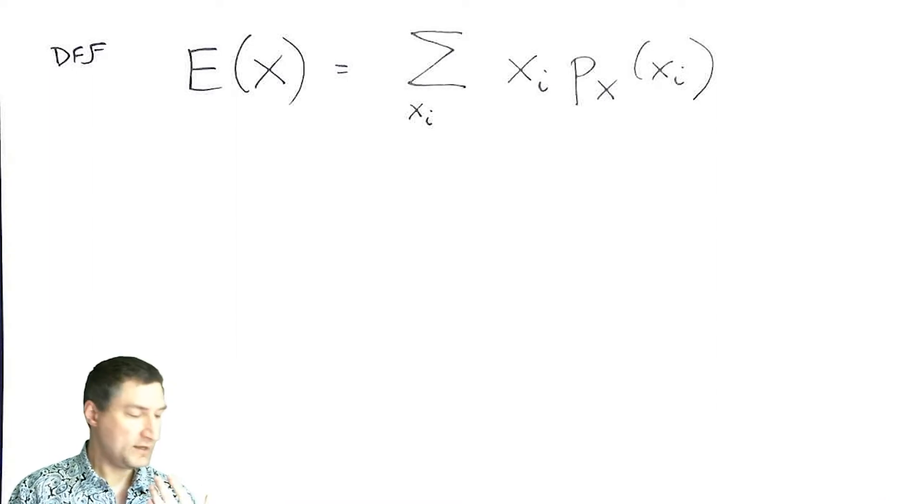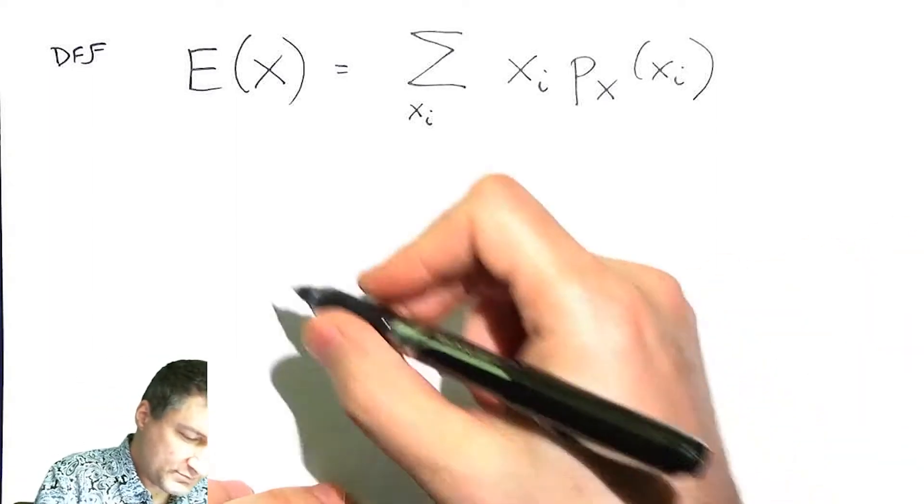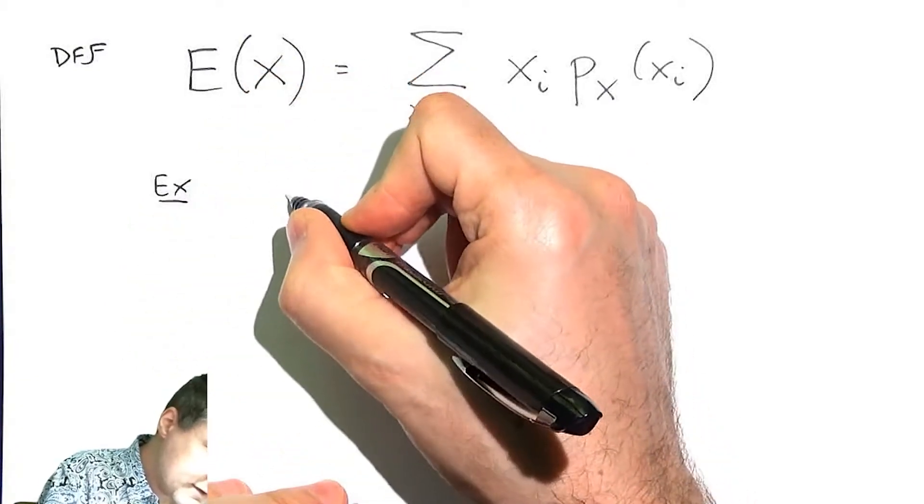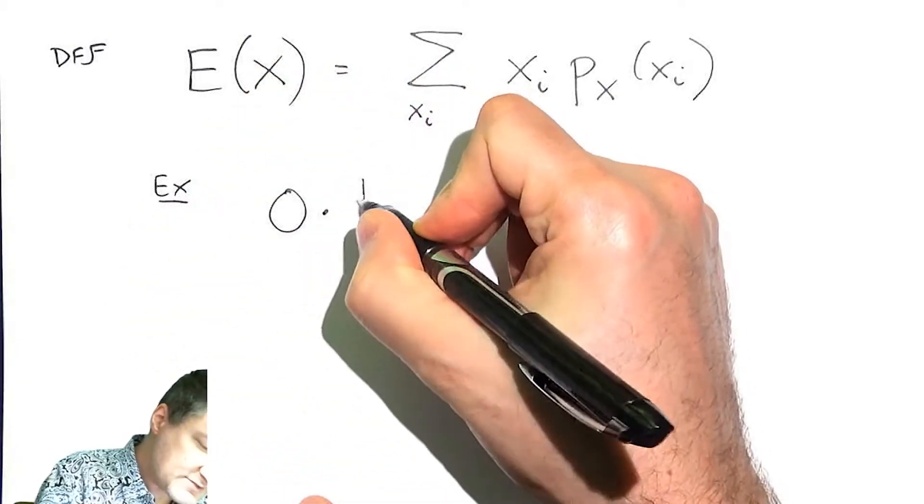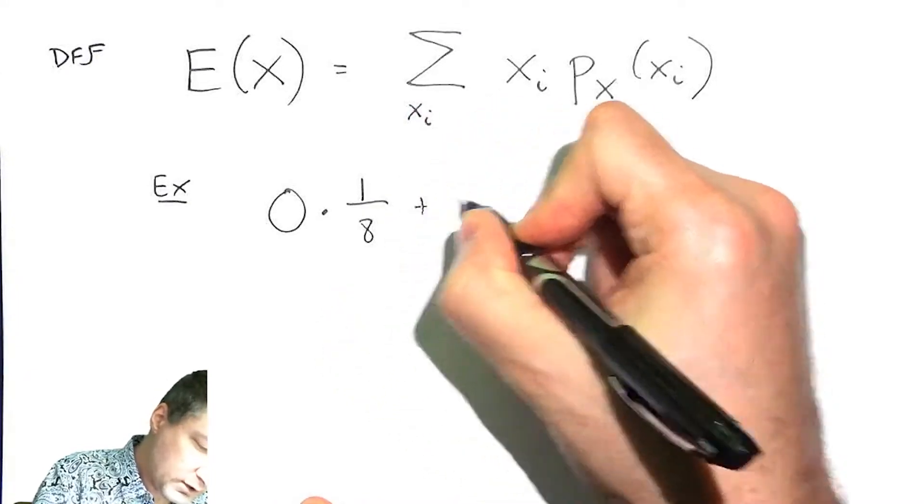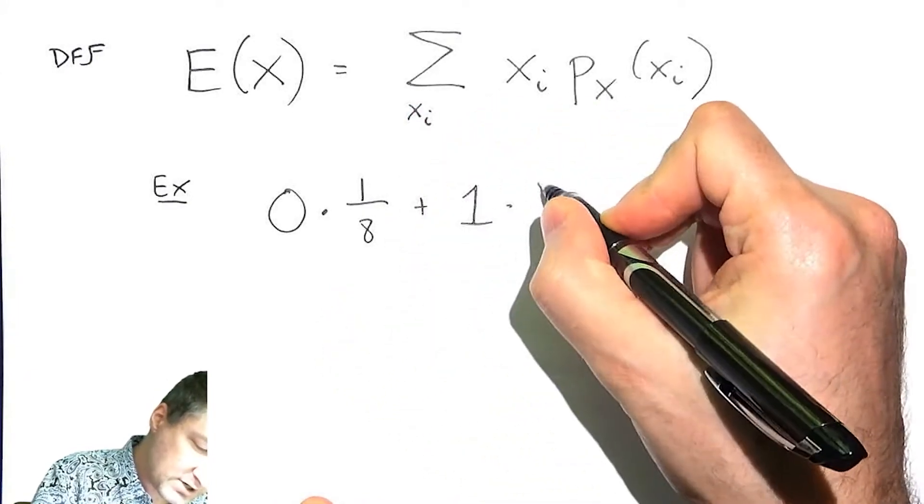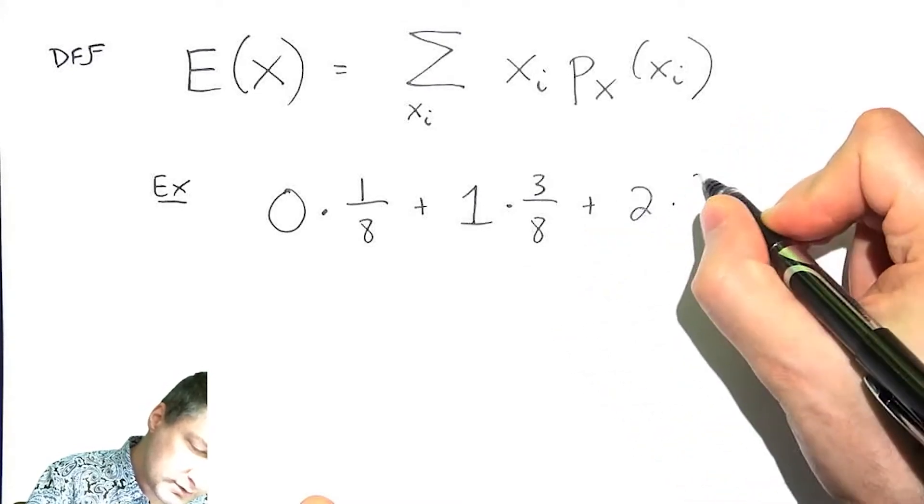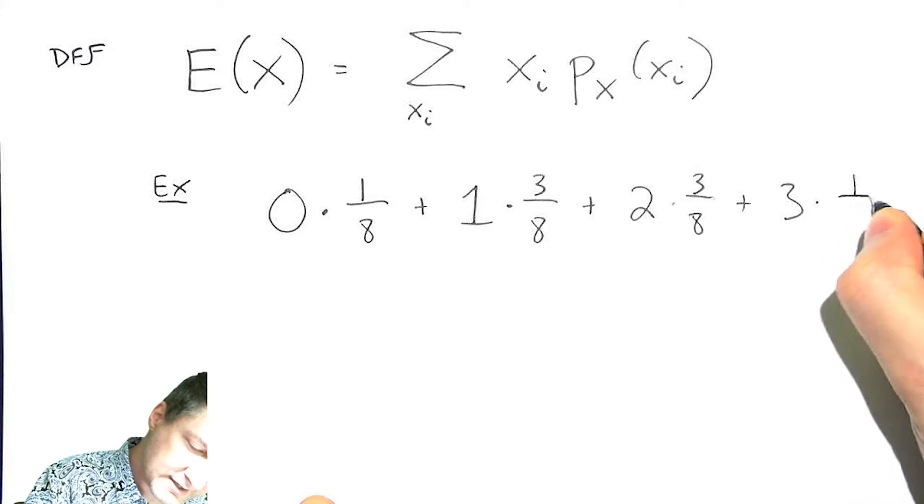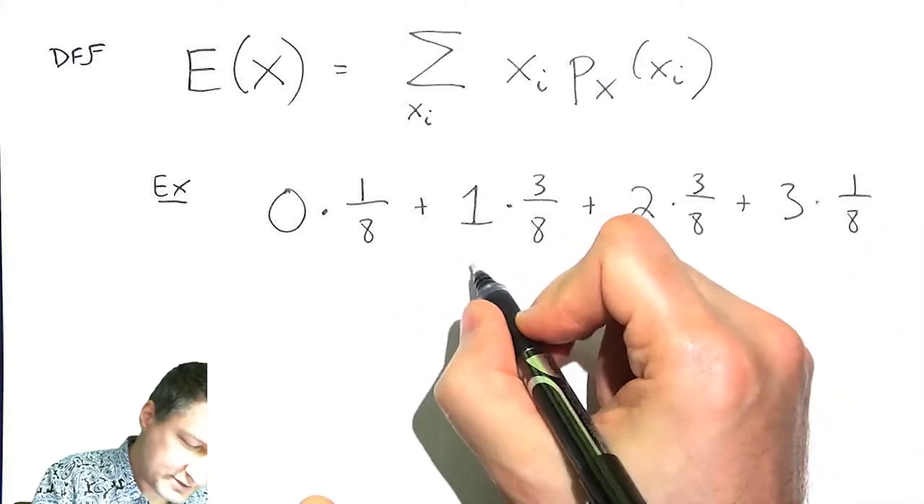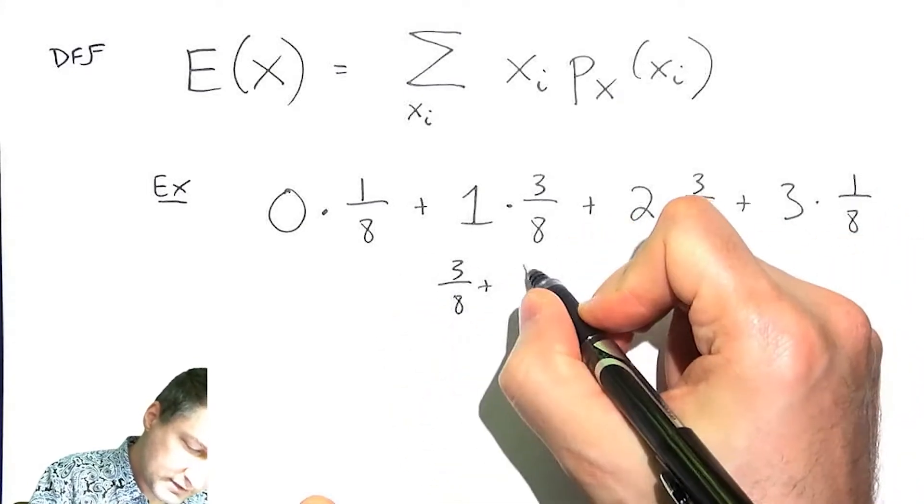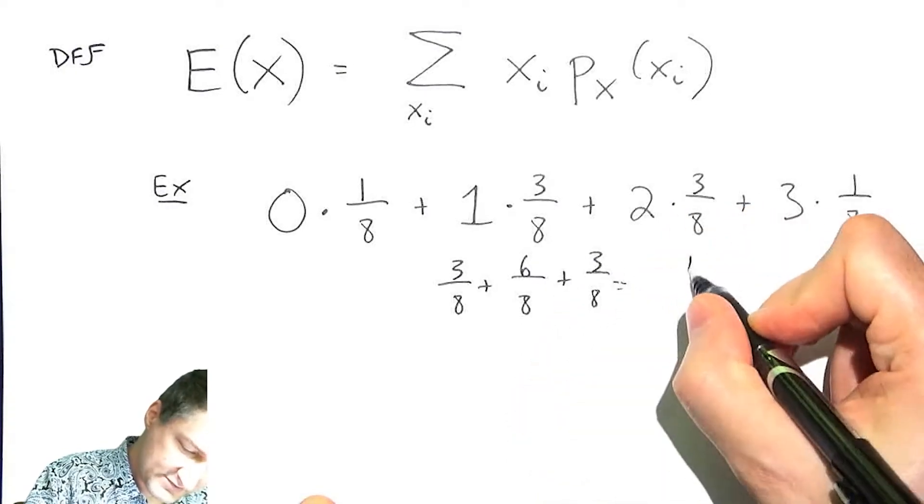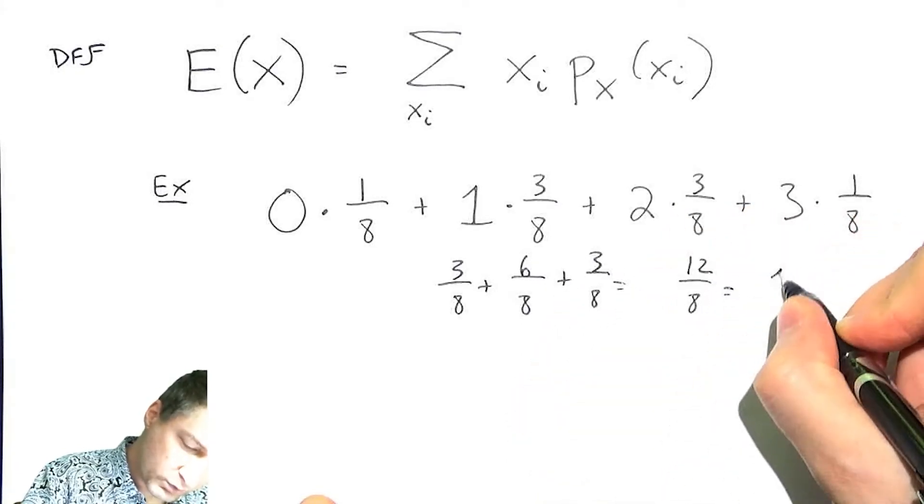And so this is, in the coin flip example, pretty easy to compute. So for the coin flip, we have zero, the probability of getting zero was 1/8, the outcome one times the probability of getting one was 3/8, the outcome two times that probability, and the outcome three times this probability. So what do I have? I have zero plus 3/8 plus 6/8 plus another 3/8 is 12/8, which is 1.5.